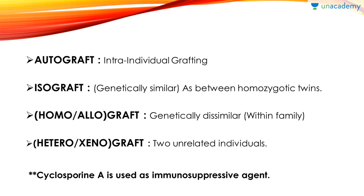Next is homo or allograft — that is for genetically dissimilar individuals, like within your family. Suppose you donate your kidney to your mother — that will be an allograft or homograft. It might be possible that it gets rejected because the HLA might not be matching, or it might be possible that it grafts perfectly.